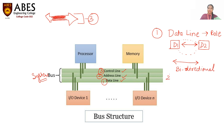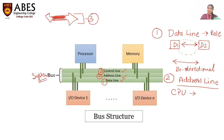The second is the address line. As the name suggests, it is unidirectional, and it is actually fetching the particular location of that data from the memory. That is the reason it is single-directional.